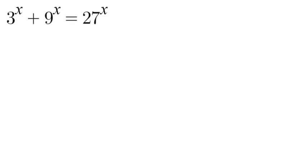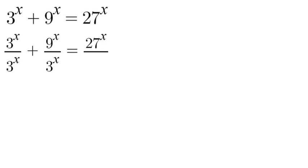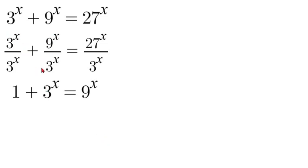The first thing we're going to do here is divide the whole equation by 3 to the power of x. Dividing everything by 3 to the power of x, it will simplify: 3 to the power of x will cancel, these will reduce down to 3 to the power of x, and 27 to the power of x will reduce down to 9 to the power of x.